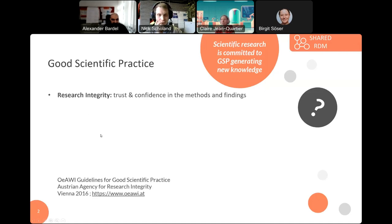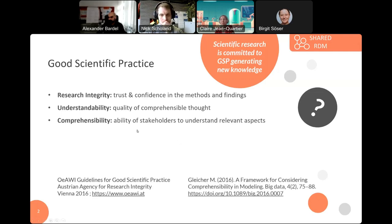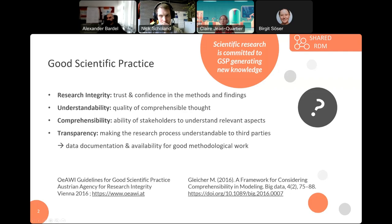This implicates other notions like research integrity, which is important to create trust and confidence in the methods and findings. Also implicating understandability, which is a quality of comprehensible thought, and comprehensibility itself is the ability of stakeholders to understand development aspects. And transparency — it is important to make the research process understandable to third parties.